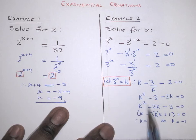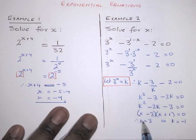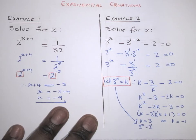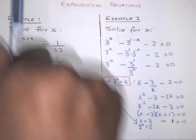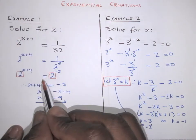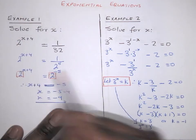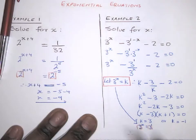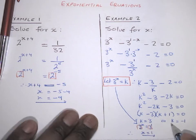Solving gives k = 3 or k = −1. Remember k = 3^x, so substitute back. If k = 3, then 3^x = 3 = 3^1. Since the bases are the same, we drop them and get x = 1.